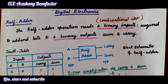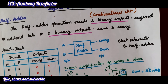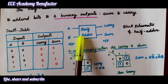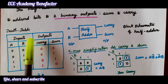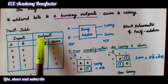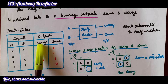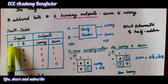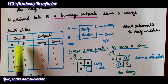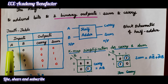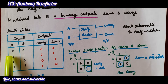Let us now see the truth table of half adder. The truth table will comprise of inputs and outputs. There are two inputs A and B, and the outputs are carry and sum. For two inputs, we will write four possible combinations because it is 2 to the power 2, which equals 4.